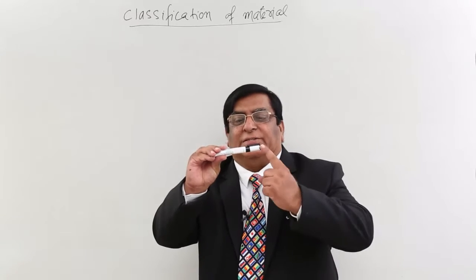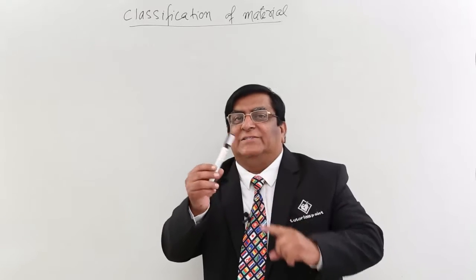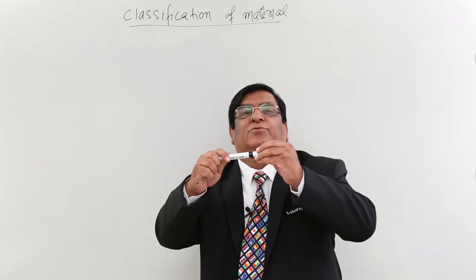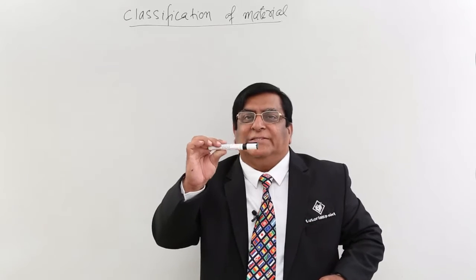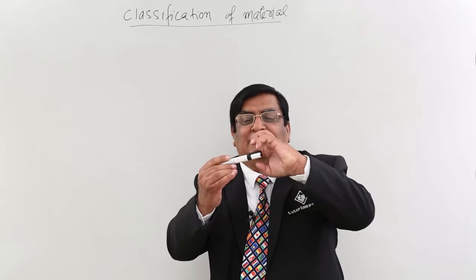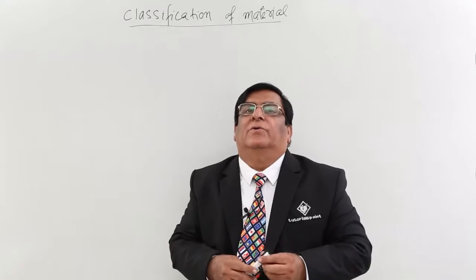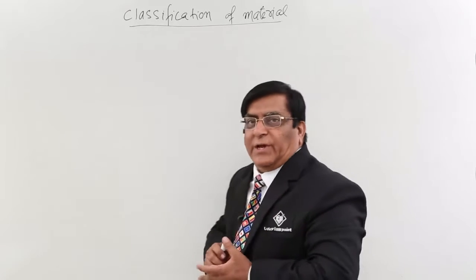There is one class of material which allows charges to move: copper, silver. There is another class of material which do not allow that to move: glass, plastic. You rub it, the charges will accumulate here and these charges will not move. So we classify into two types.